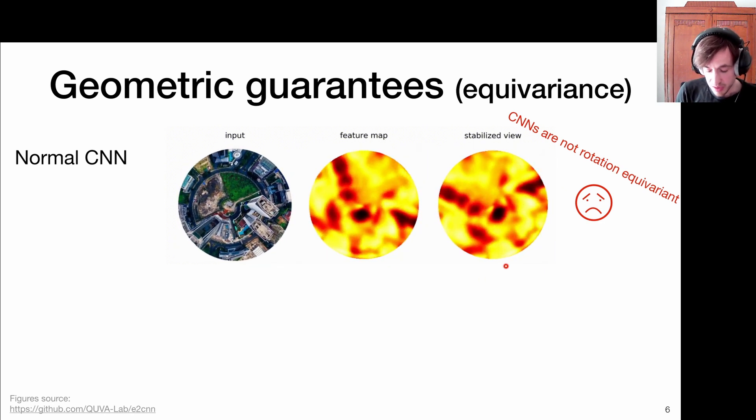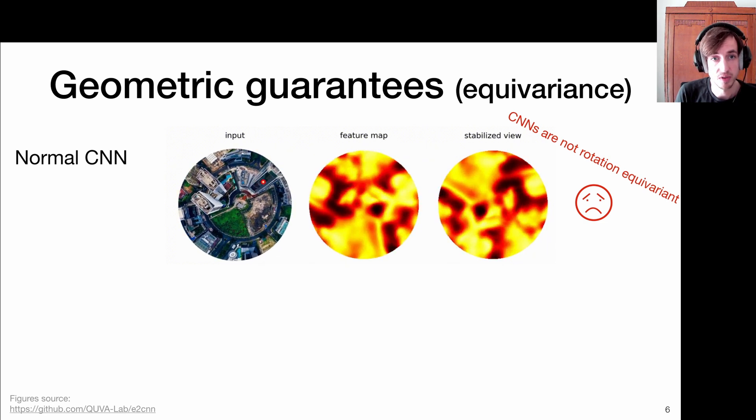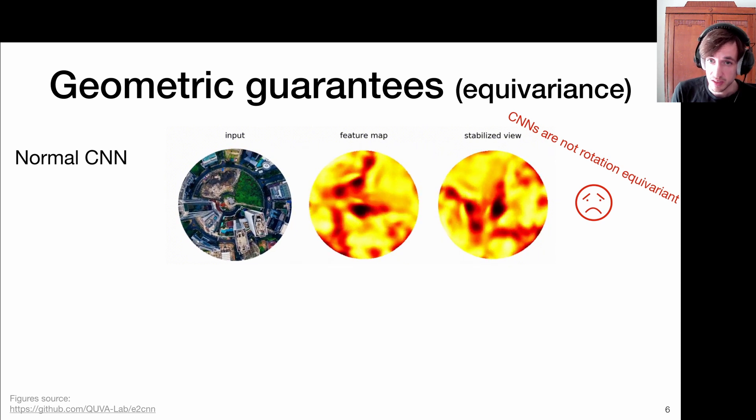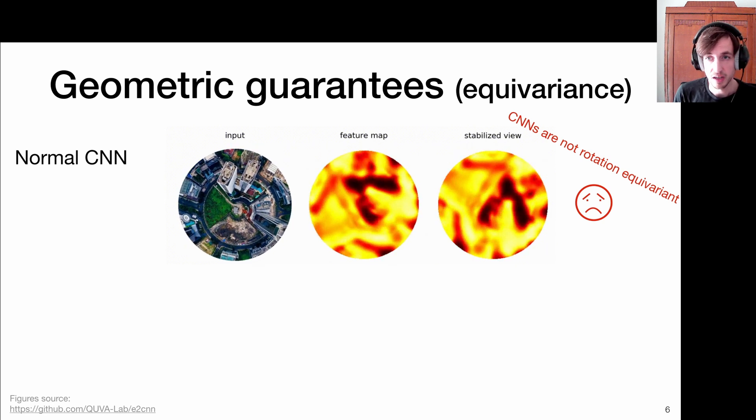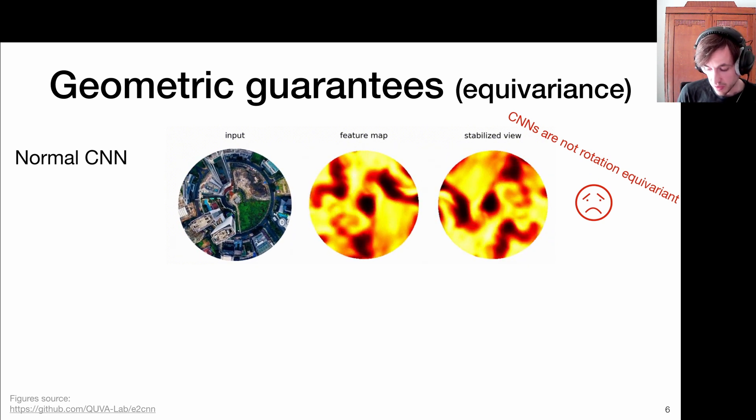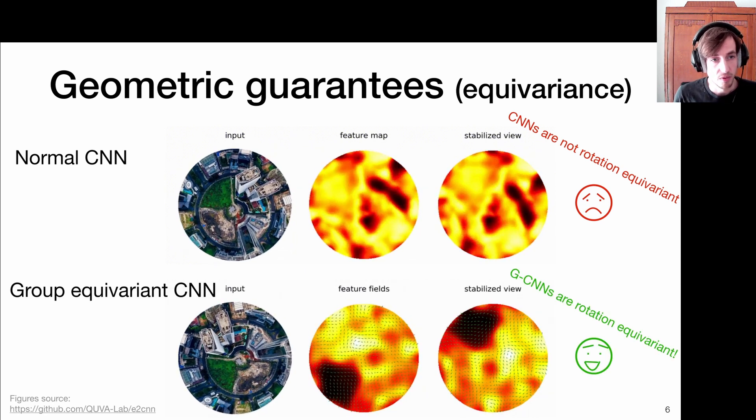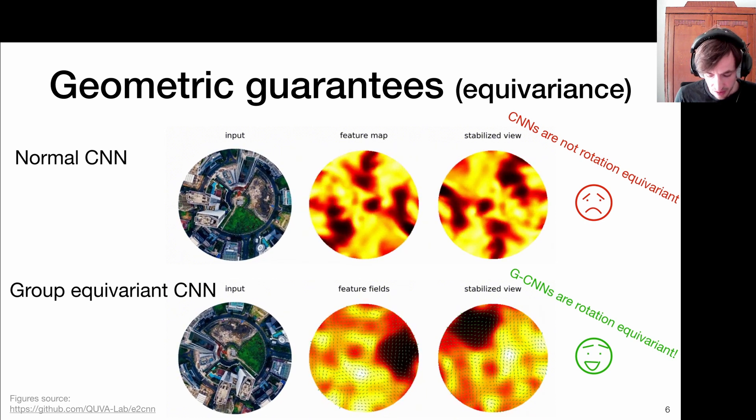We see that the feature values at a location, for example, here at this building, it completely changes, which makes this feature detector based on normal CNNs completely unreliable in many applications. CNNs are not rotation equivariant, but we can make them rotation equivariant based on the theory covered in this lecture, based on group equivariant CNNs.